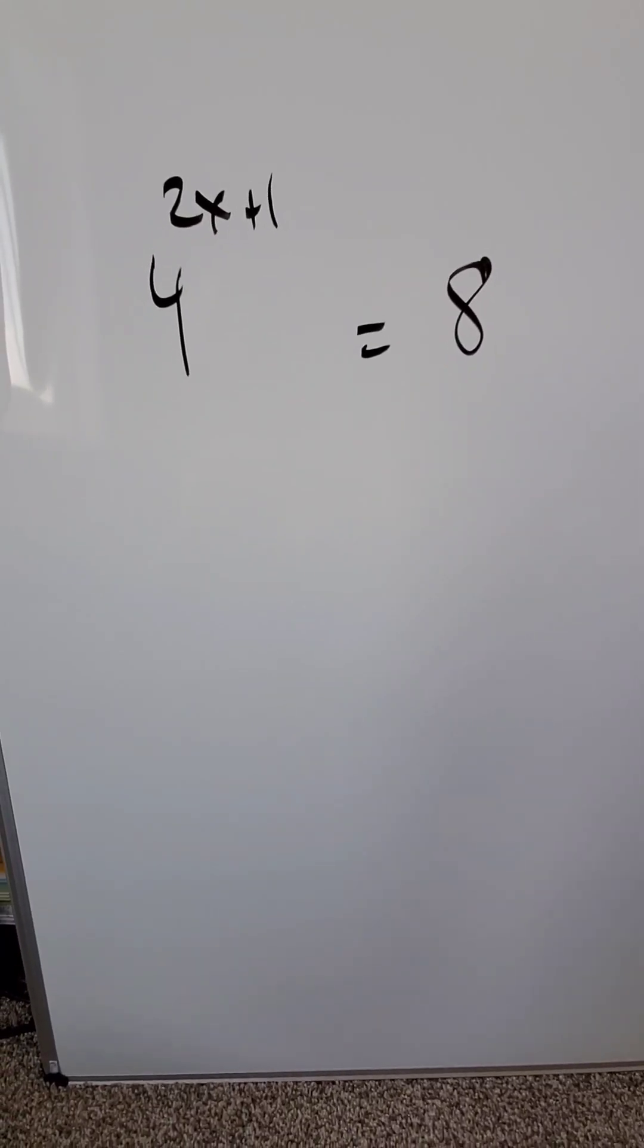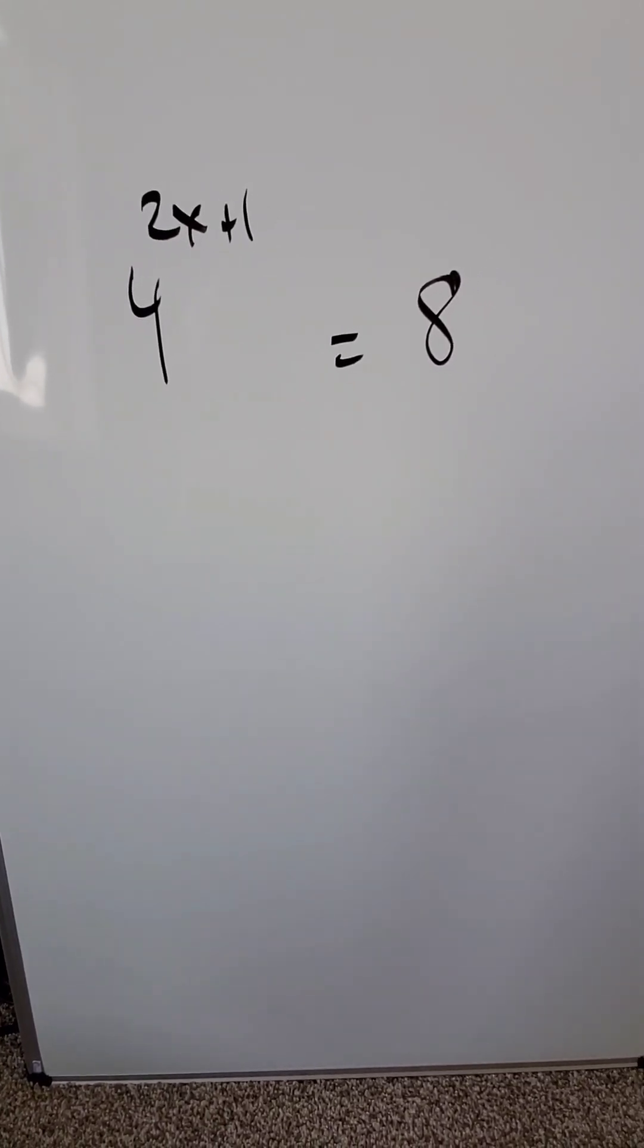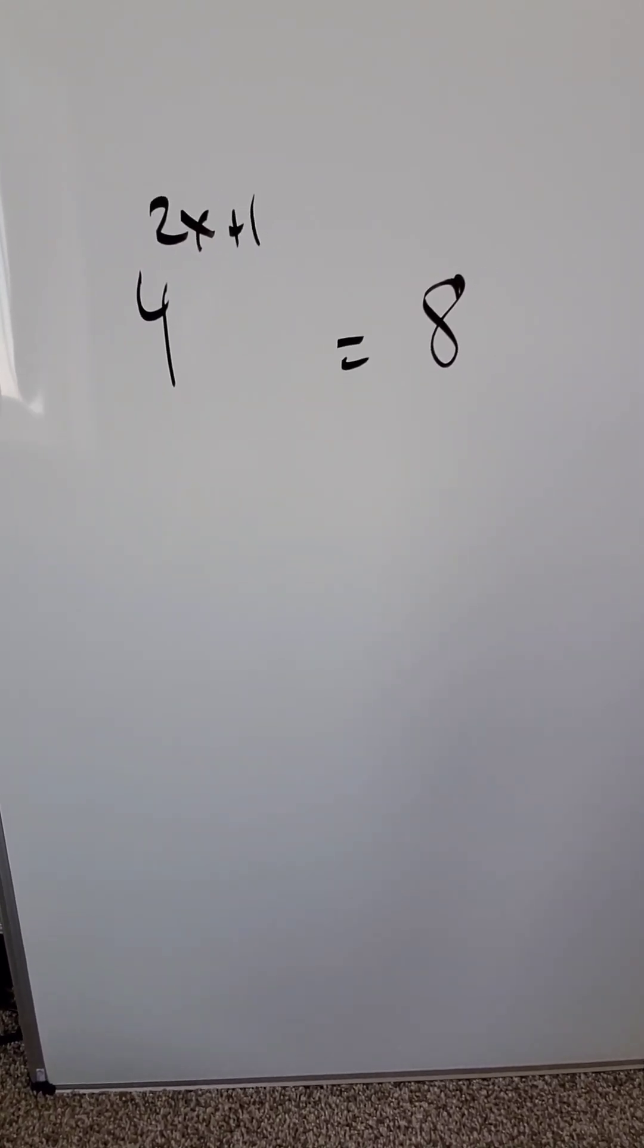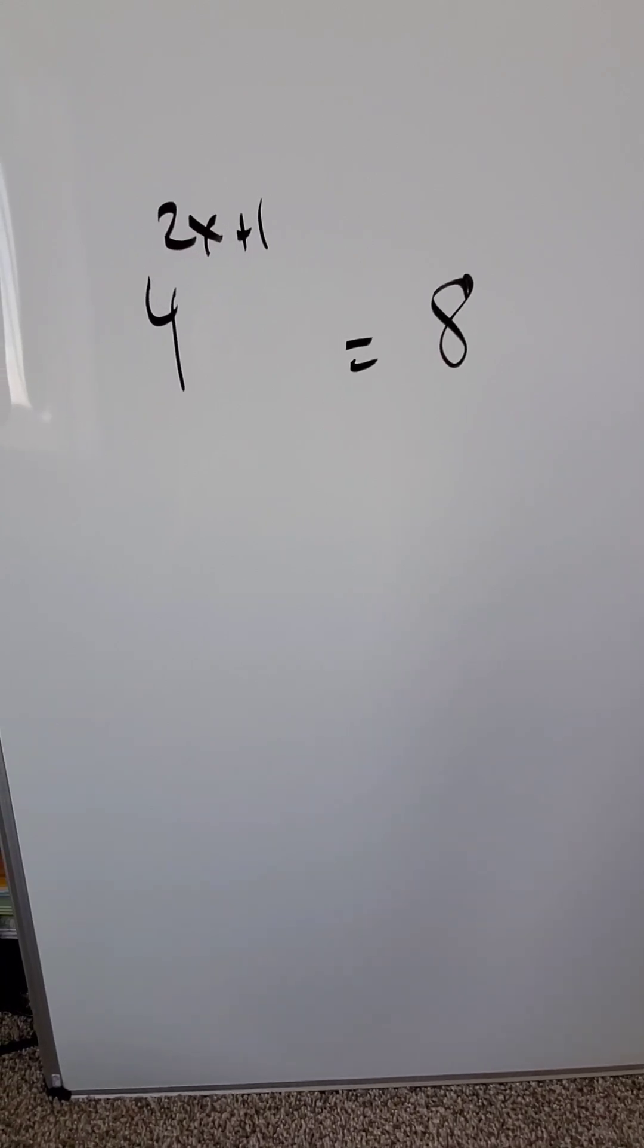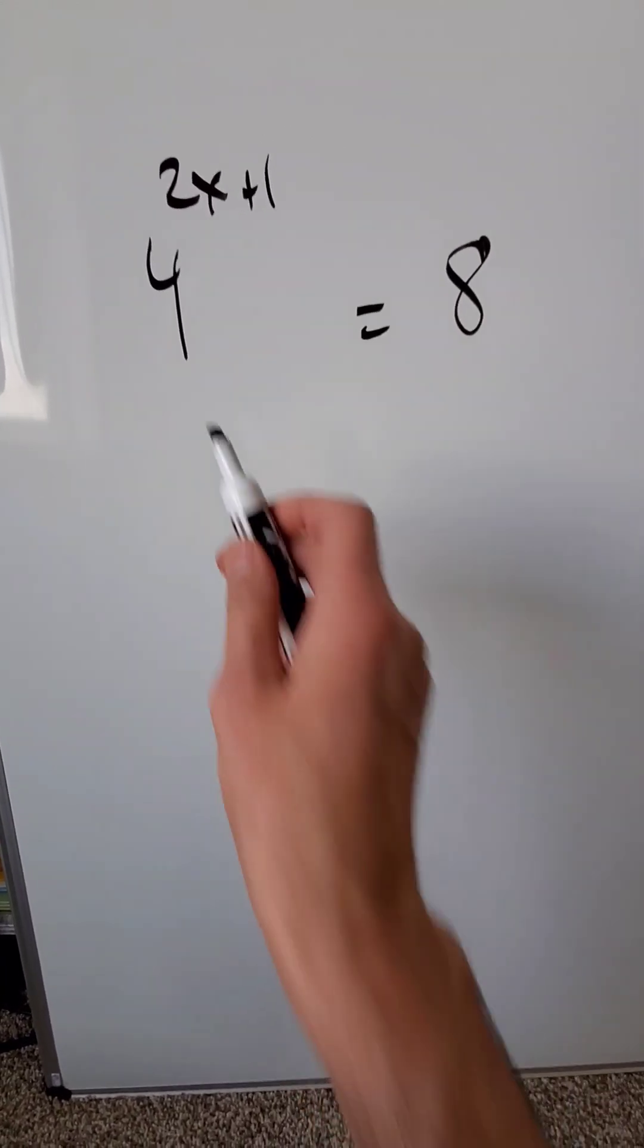When you have a question of this type and you convert it into common bases, equivalent bases, you can cancel out those bases. But why can you cancel out those bases? And let's look.